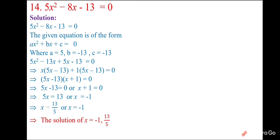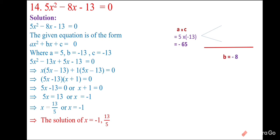Another practice problem: 5x² − 8x − 13 = 0. Here a × c = 5 × (−13) = −65 and b = −8. Two numbers with product −65 and sum −8: −13 and +5 work. Splitting −8x as −13x + 5x, taking x common from the first two terms and 1 common from the last two. Setting each bracket to zero gives the solutions.